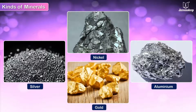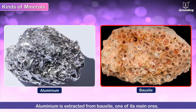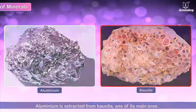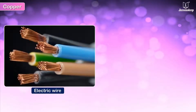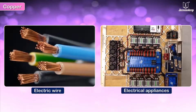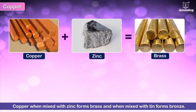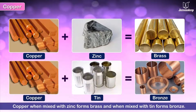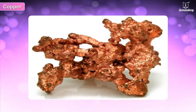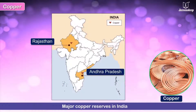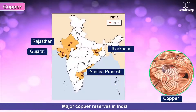Aluminium is extracted from bauxite, one of its main ores. Copper is a valuable metal as it is a good conductor of electricity. It is largely used in making electric wires and electrical appliances. Copper mixed with zinc forms brass, and mixed with tin forms bronze. It is also used for making household utensils. Copper occurs in small quantities in India and is found in Rajasthan, Andhra Pradesh, Gujarat, Jharkhand, and Tamil Nadu.